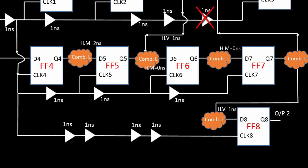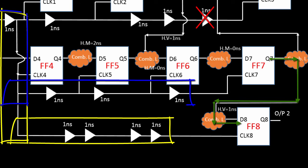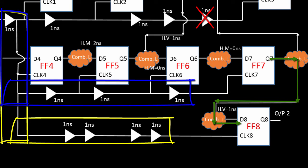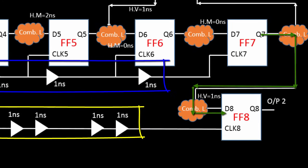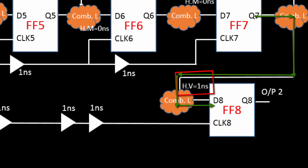Now this timing path is between FF7 and FF8 and before downsize the clock skew was 10 minus 8 equals to 2 nanosecond. But after downsize it become 5 minus 4, 1 nanosecond. Means this violation is automatically fixed and convert into the 0 nanosecond hold margin.